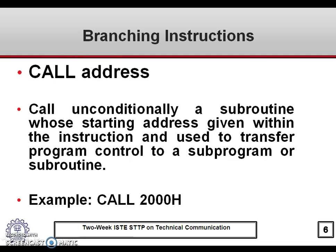The CALL instruction calls a subroutine, and the address of the subroutine must be specified in the instruction. For example, CALL 2000H. When this instruction is executed, the program counter will contain the address 2000H, and execution will begin from that address onwards.